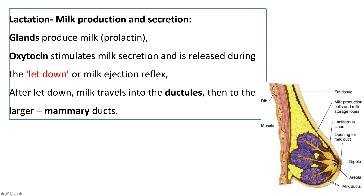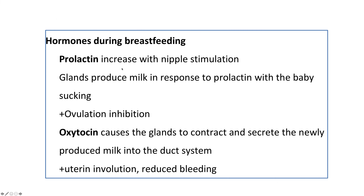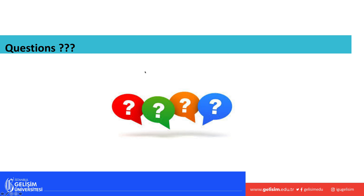During childbirth, oxytocin is released, causing milk ejection — called letdown. The milk then travels through the ductules into the larger mammary ducts. Prolactin production increases with nipple stimulation — as long as a baby is suckling, the glands continue producing milk in response to prolactin. Oxytocin causes the glands to contract and secrete milk during the labor and childbirth process. That concludes this unit.